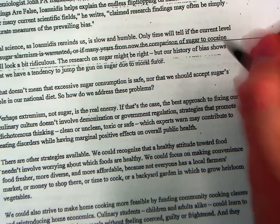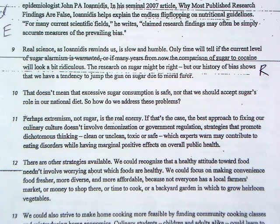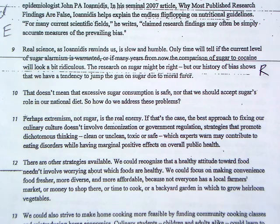On the back, there's some reasoning at the end of paragraph nine. They're talking about how our history of bias causes us to jump the gun on sugar due to moral furor — people turn sugar into a moral issue: is sugar right or wrong? But instead we should be looking at the science: is it healthy or unhealthy, okay in certain quantities, or only to avoid with pre-existing conditions? Instead, we've asked 'is it right or wrong,' associated it with religion and hyper kids, blamed sugar, said sugar is bad, and jumped to conclusions.